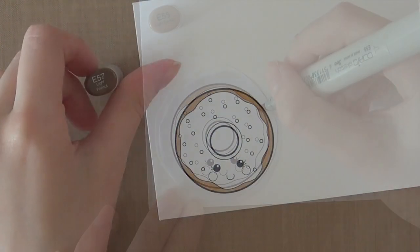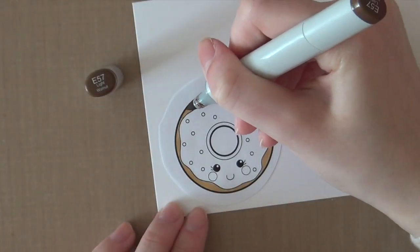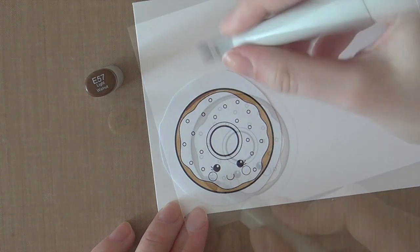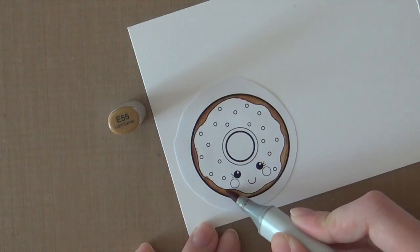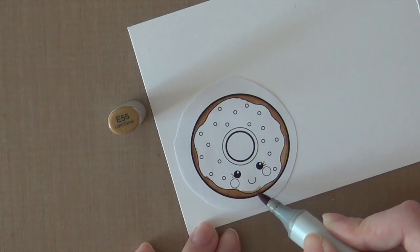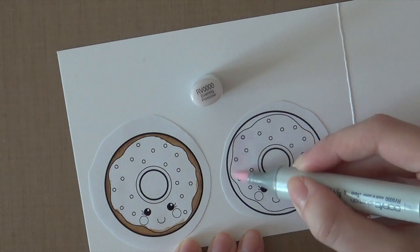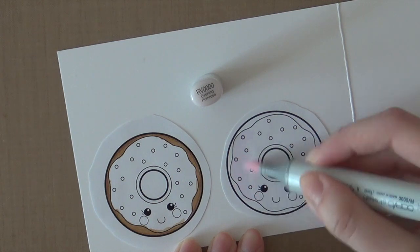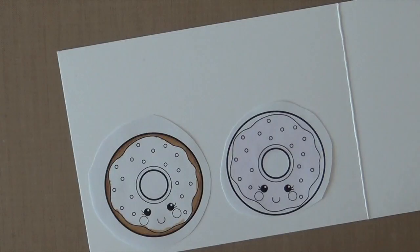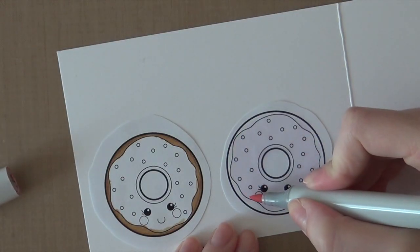Here I'm using an E55 Copic marker to add the first base of ink. And then I'm using the E57 Copic marker to add some shading. And then next I'm just blending it all together using the E55 color again.